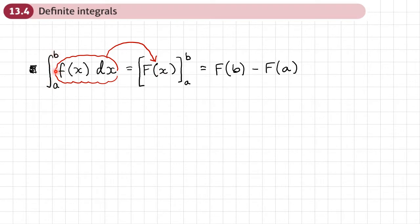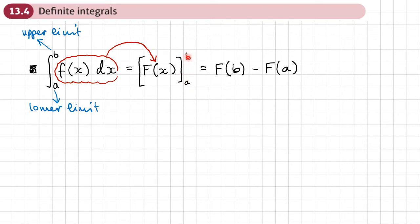But there are two new things here — these letters. These are going to be numbers. This number at the top we call the upper limit, and this value at the bottom we call the lower limit. These two numbers appear again over here. Once we've integrated this function, we then put it into square brackets to indicate we've integrated and are now going to do something with these numbers.